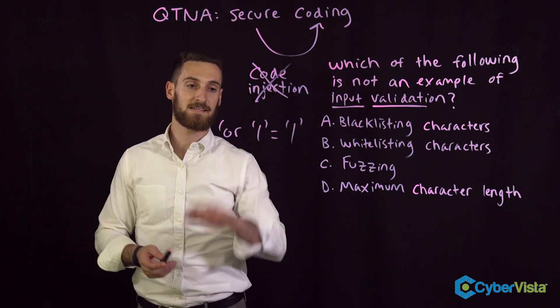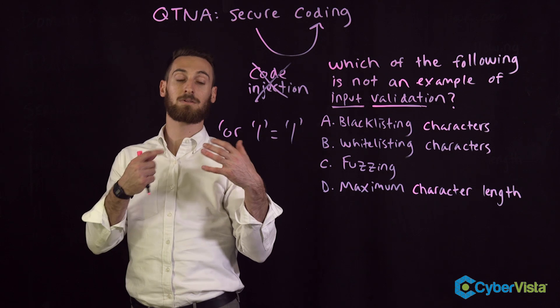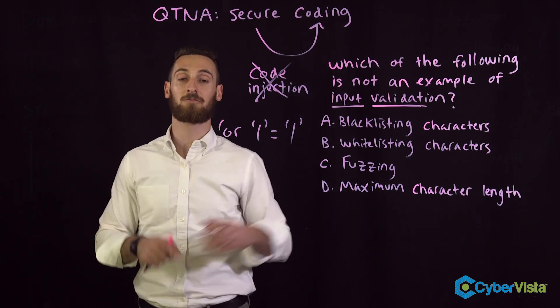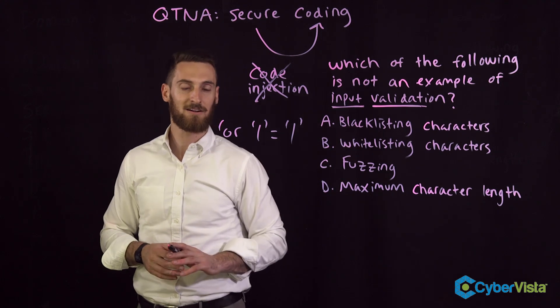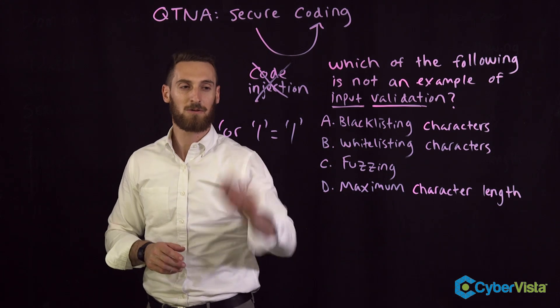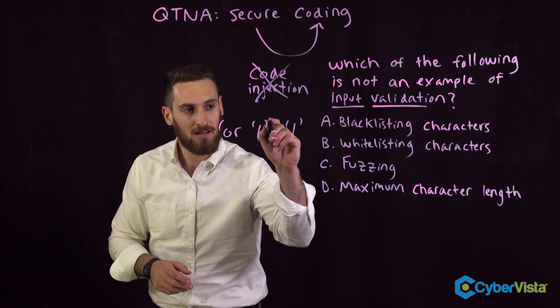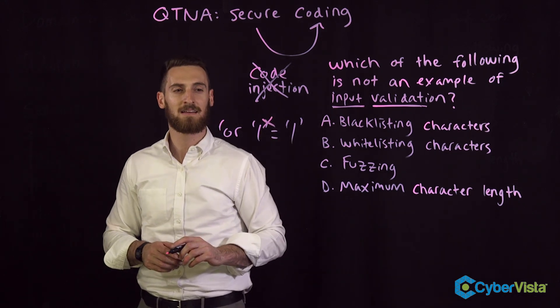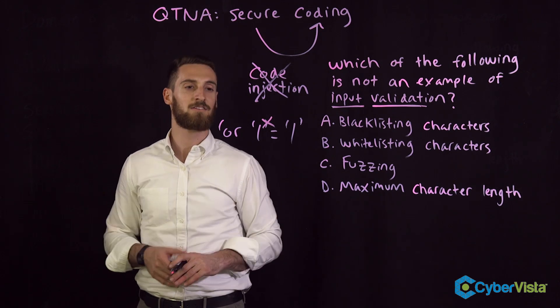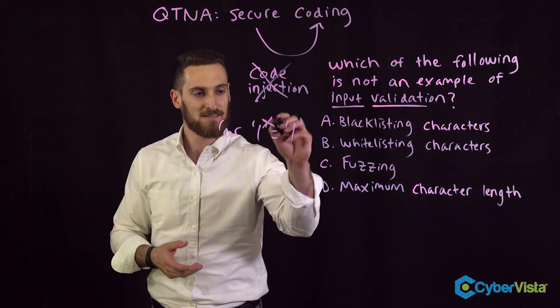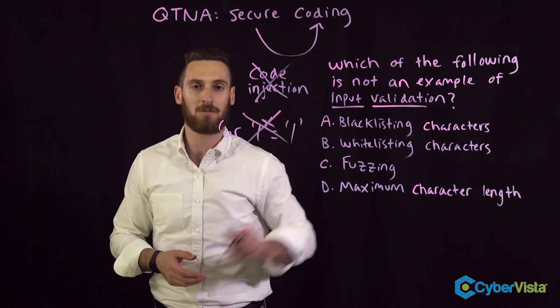The point here is this is a malicious script that's going to pull more information from the SQL database than we're supposed to. If blacklisting characters, we're going to say, you know what, we shouldn't be allowed to type in apostrophes. That is risky, that is dangerous script that we don't want to be allowed in. So if we see this, we're going to block it.